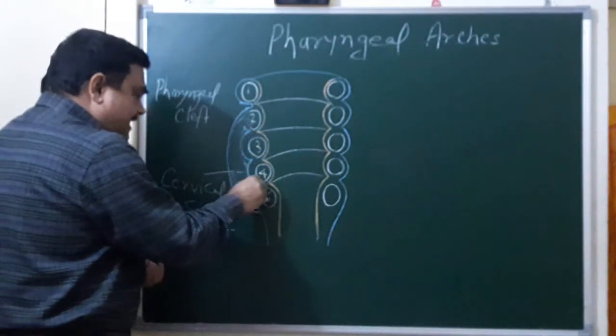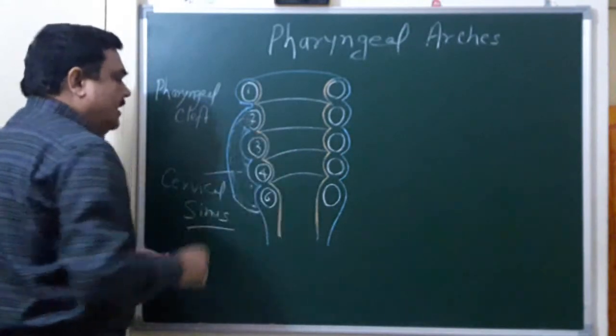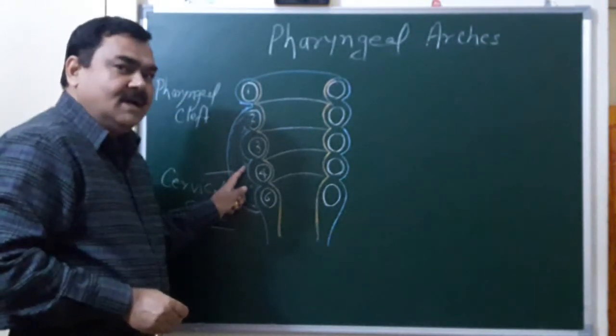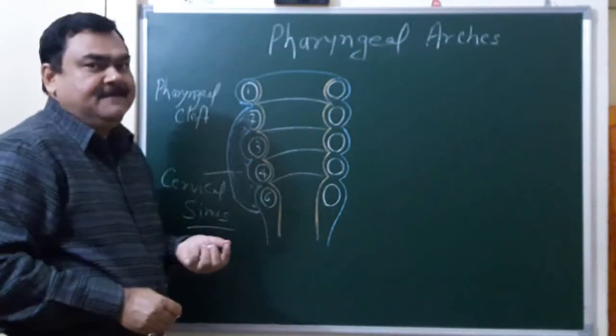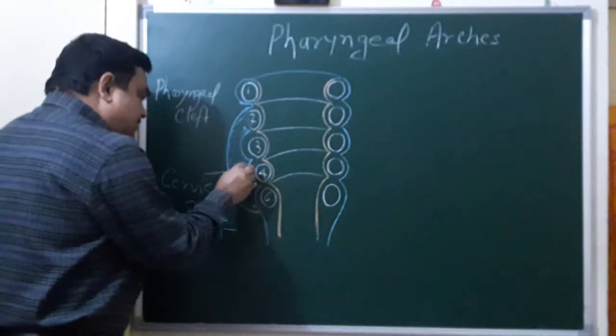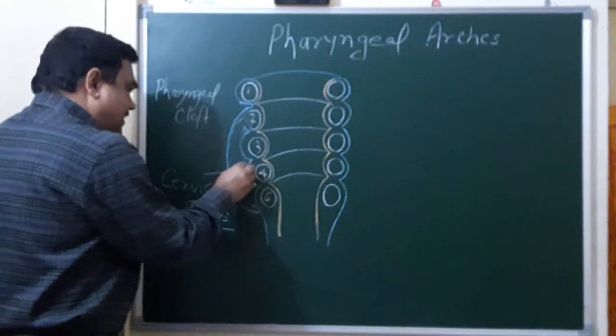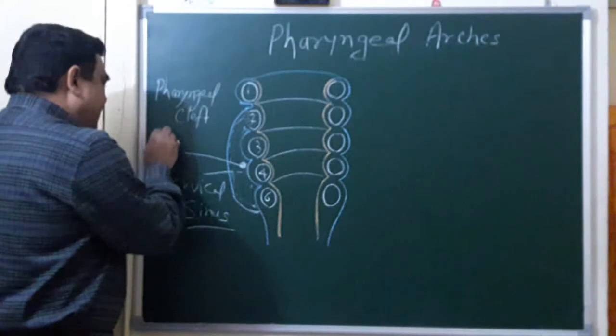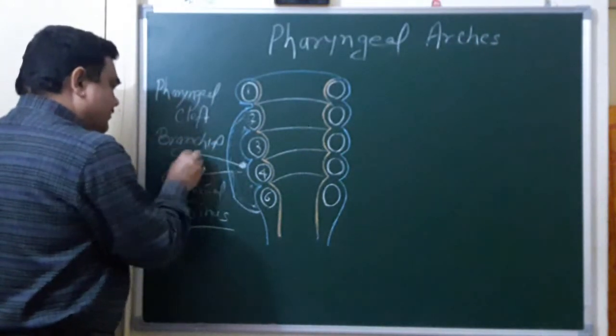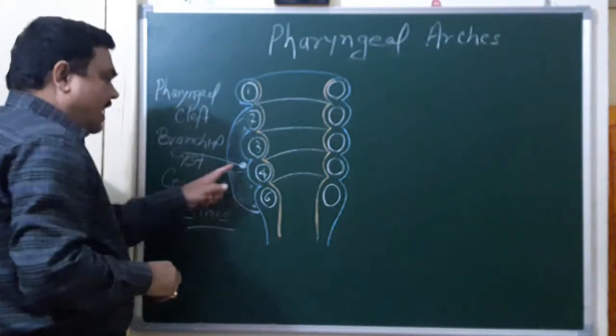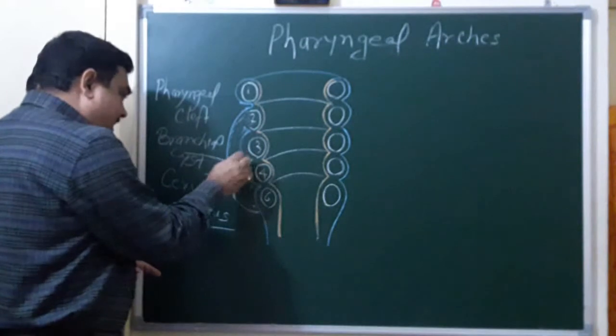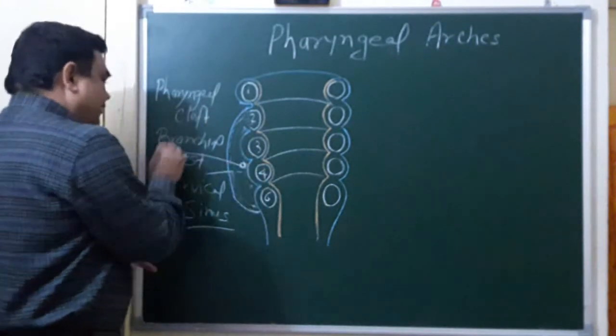But in some cases, here a cyst or small sinus is present. If cyst is present, then cyst is known as, if cyst is present here this is known as brachial cyst. And if here a sinus is present, then sinus is known as brachial sinus.